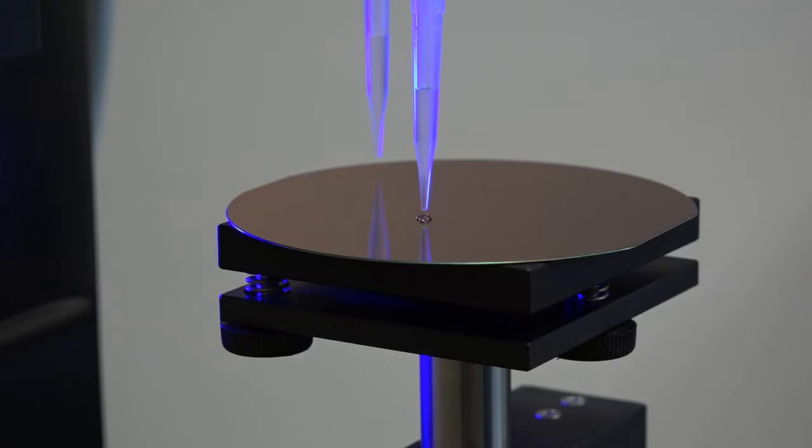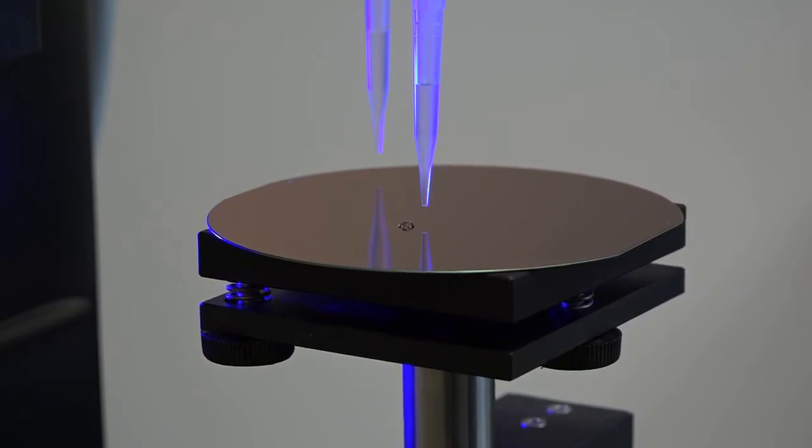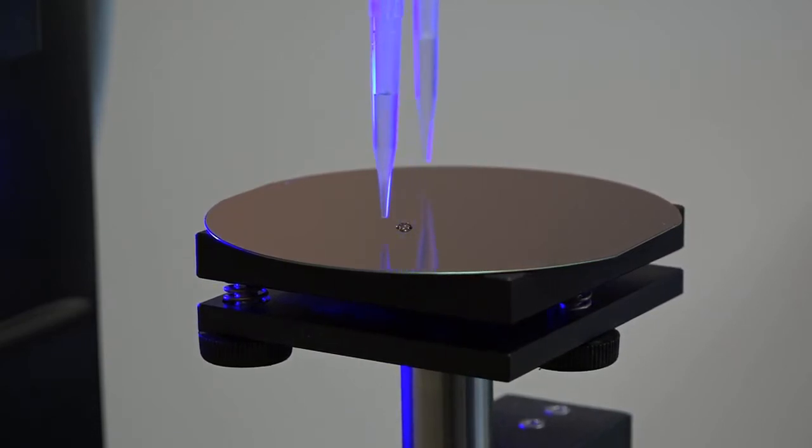After the contact angles have been analyzed, the automatic stage moves to its next position and the second dispenser is being brought into the image. Then the second dispenser creates another droplet and places that again automatically onto the surface using a precision movement.